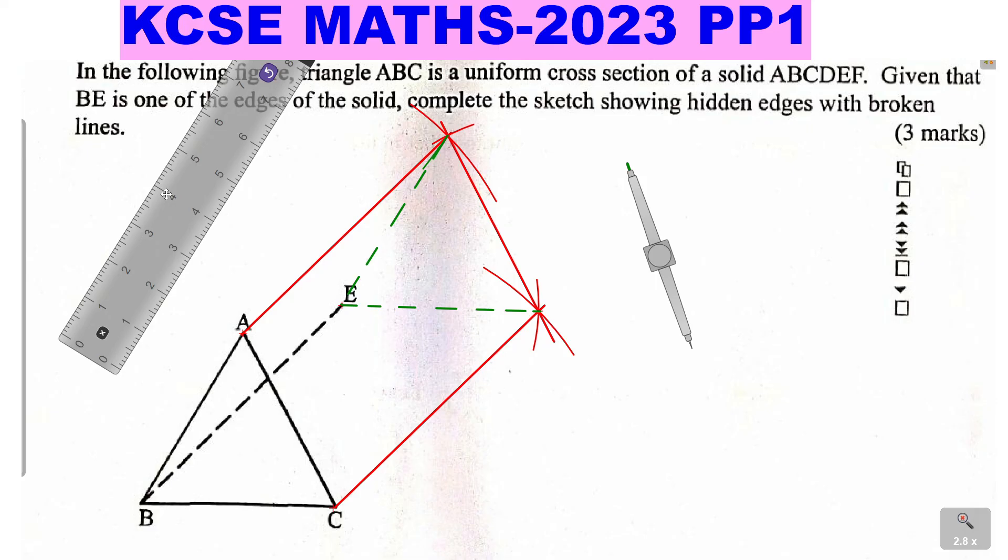So the ones that are broken are the hidden ones. So we must label this one. That is the final thing we're going to do. So A, B, C, D, E, F. This will be A, B, C. Then D will be there. E will be there. And F will be there. So you have completed the sketch and we have shown all the hidden edges with broken lines. That is how we're supposed to solve that.